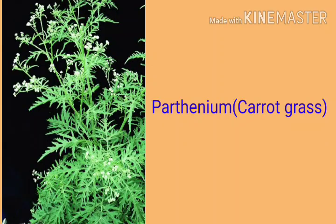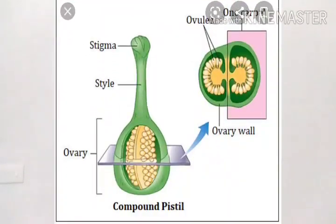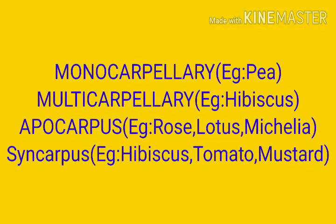Now we move to the second part of pre-fertilization: the pistil or gynoecium. The gynoecium is the female reproductive whorl and is composed of carpels. The carpel is the female reproductive part. If it is single, it is called monocarpellary, as in the pea flower. More than one carpel makes it multicarpellary — for example, hibiscus.